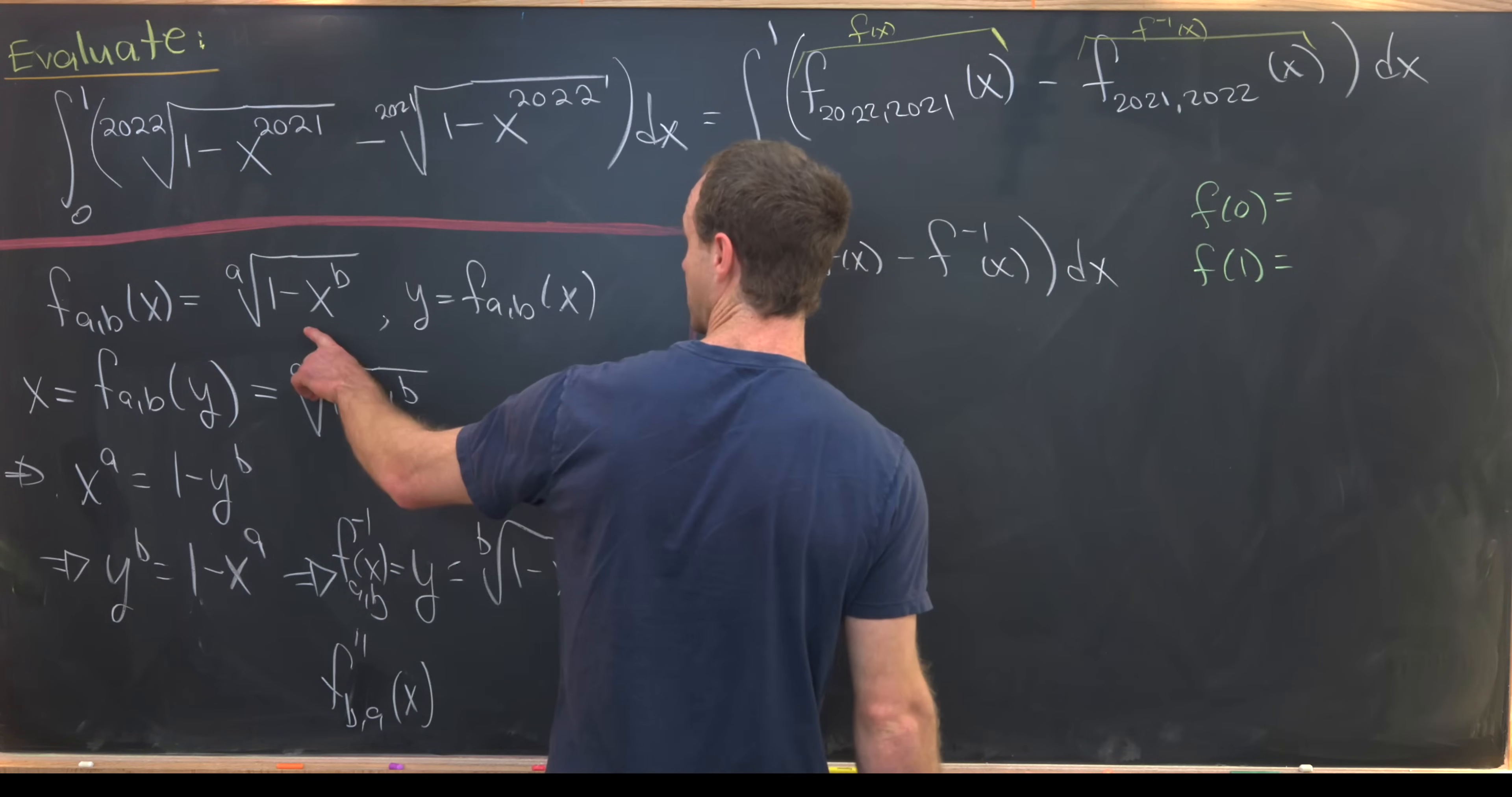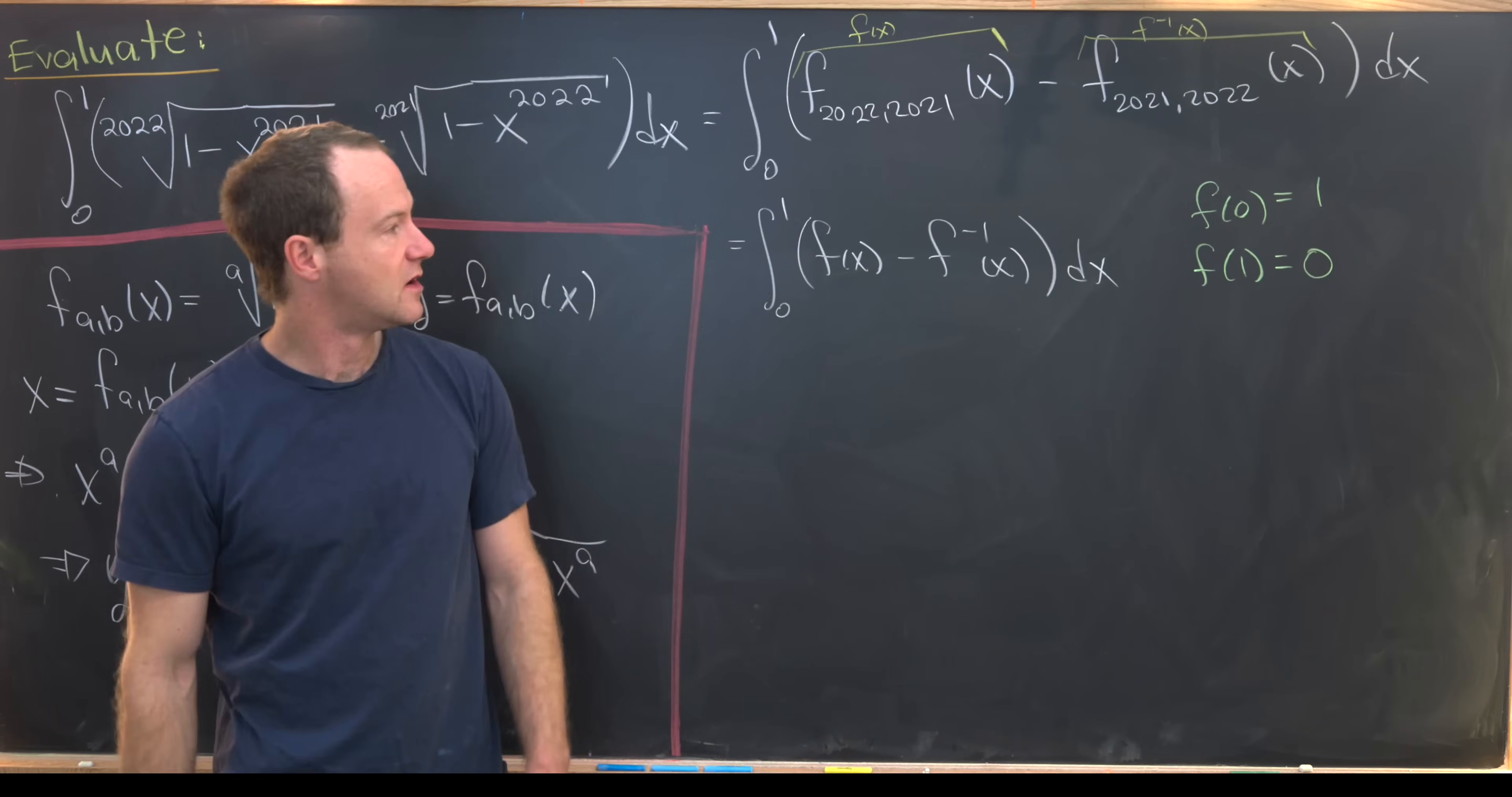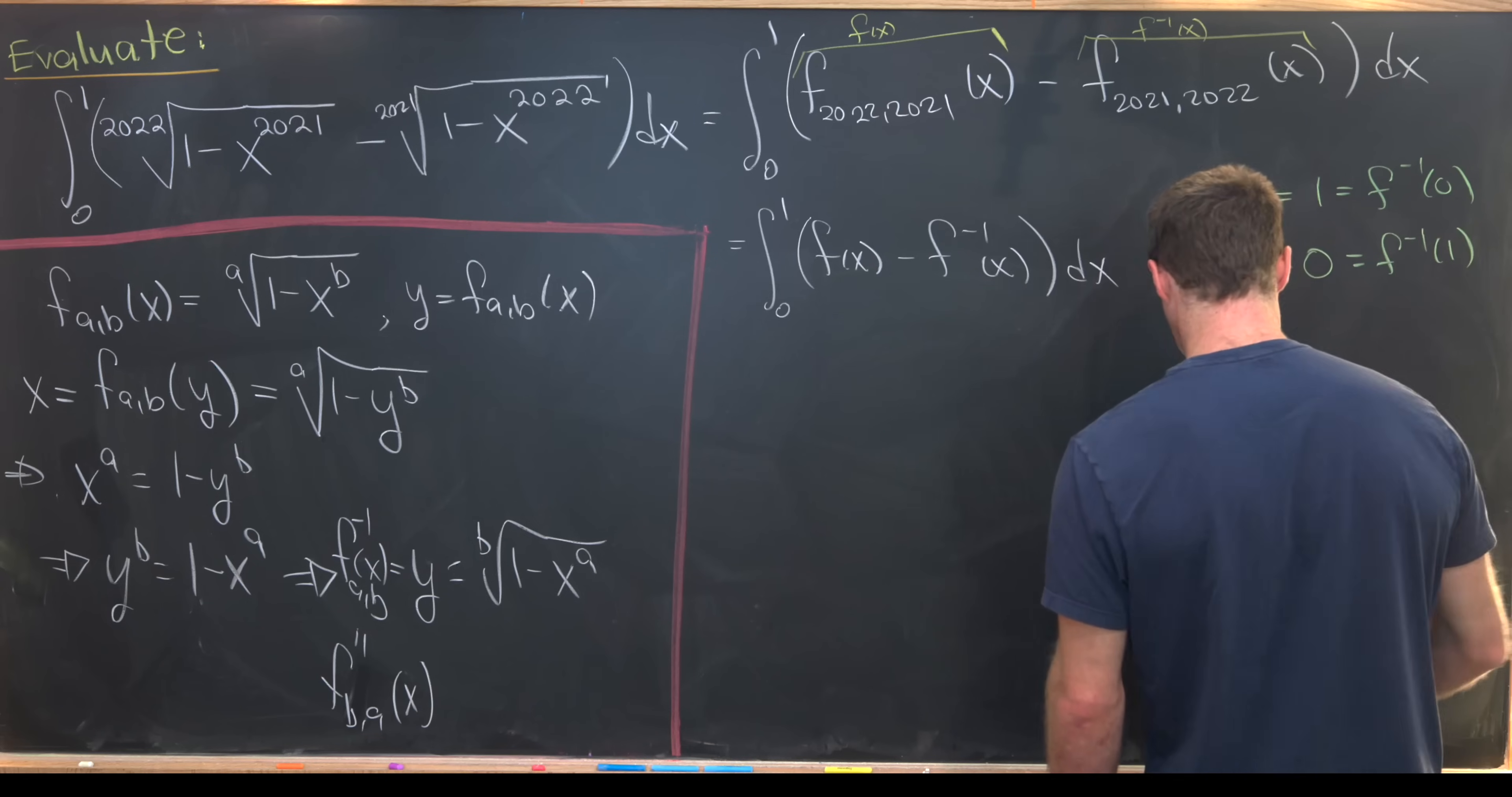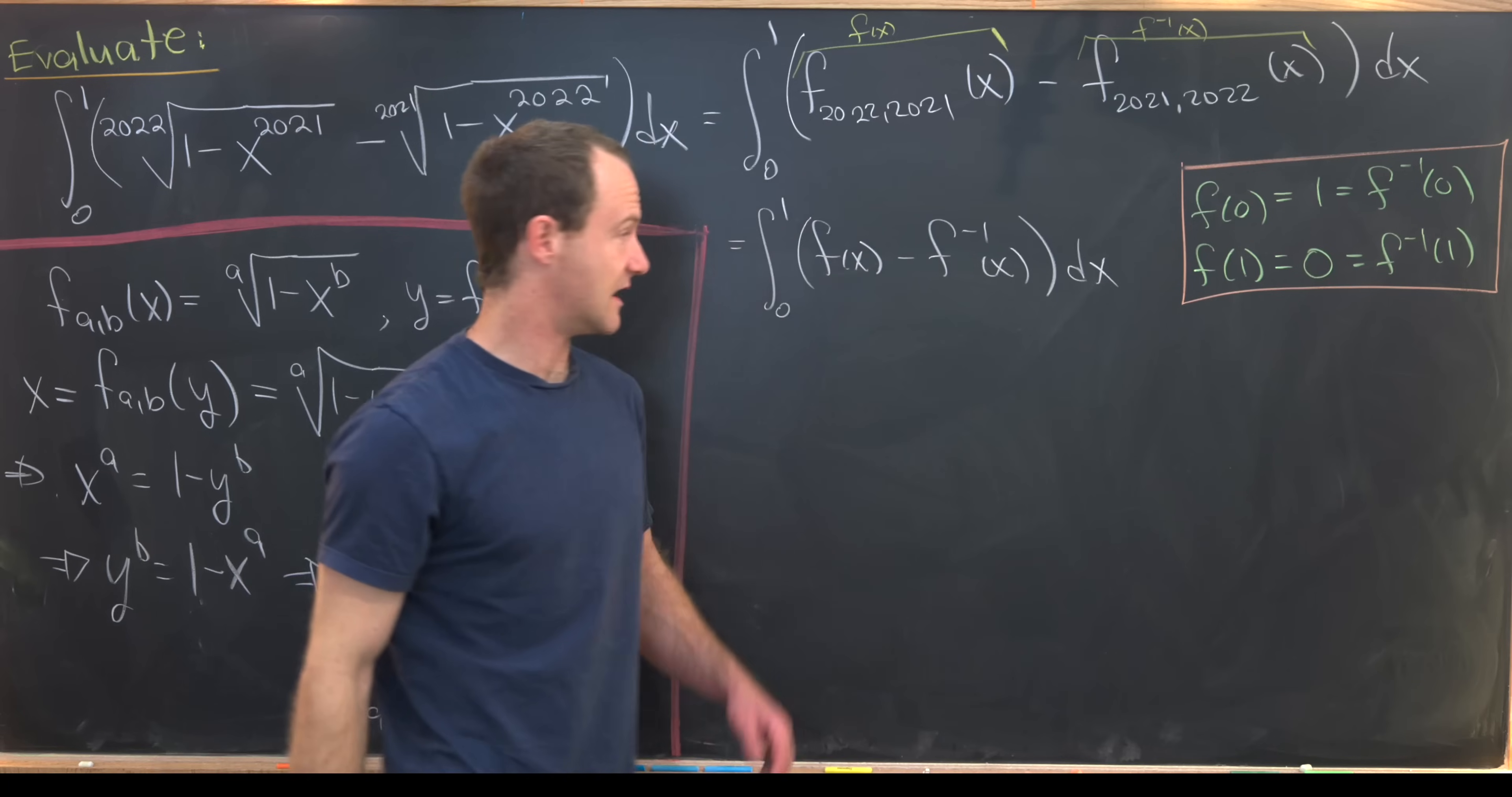We'll first notice that f of 0 is 1 and then f of 1 is 0. But then likewise, f inverse of 0 is also 1 and f inverse of 1 is also 0. That's because we've got this symmetric relationship between f and f inverse.